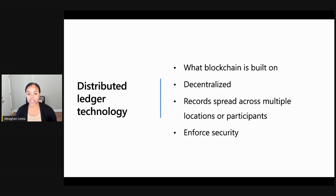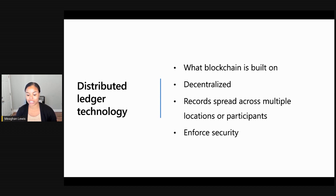A distributed ledger is really just a database spread across multiple locations or participants. Blockchain builds on top of that by implementing a data structure as a chain of blocks and enforces a secure way to make and verify transactions.